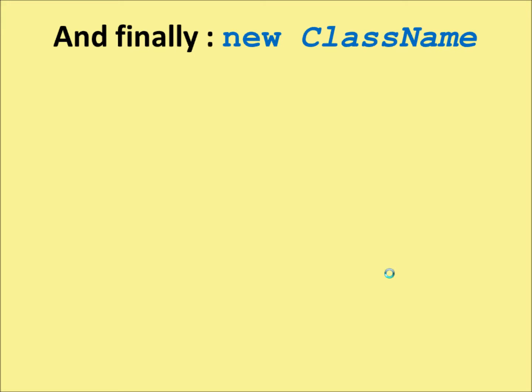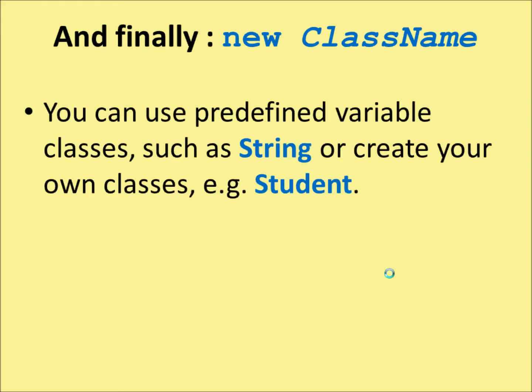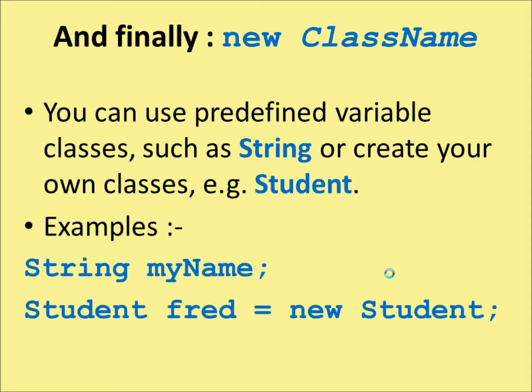Finally, you can declare your own variable types. You can use predefined variable classes such as String, or you can create your own class — Student, for example. So examples would be: String myName; or Student fred = new Student().